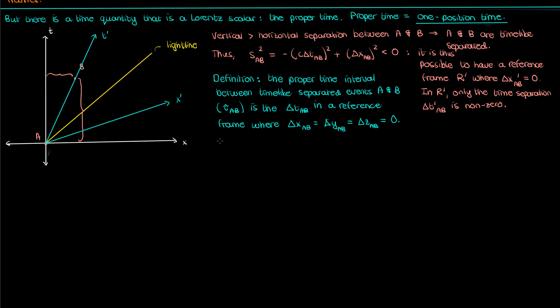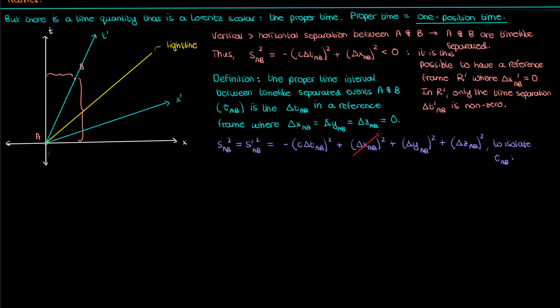To calculate proper time, recall that s squared is a Lorentz scalar, the same in both the unprimed and primed reference frames. The proper time interval is the time separation between A and B in the frame where their spatial separation is zero. So in the spacetime interval expression, the proper time tau is the delta t you get when delta x, delta y, and delta z are all zero. Canceling those terms, moving the negative sign, taking the square root, and dividing by c gives: the proper time interval between A and B equals the square root of the negative spacetime interval divided by c. I'll call this equation 1.